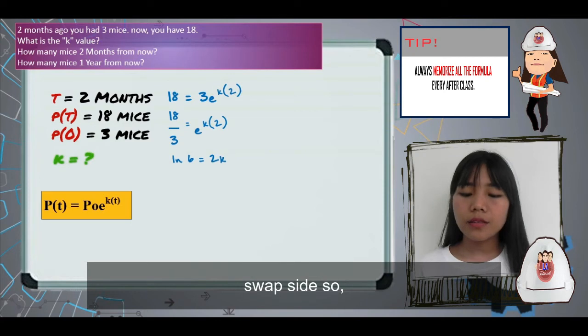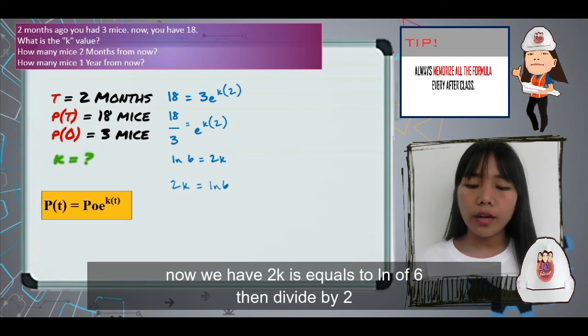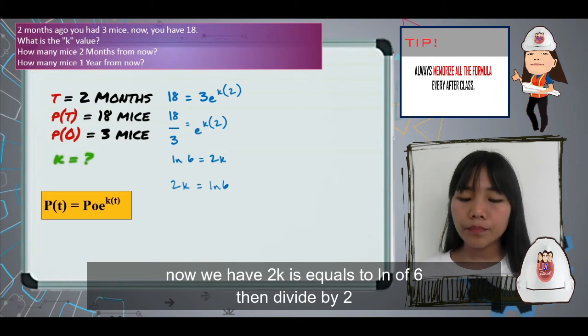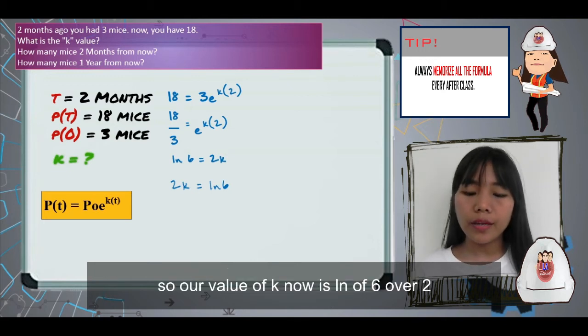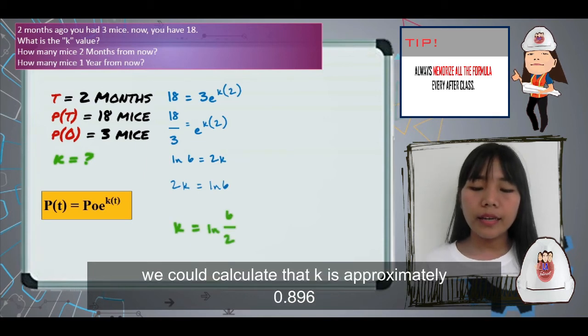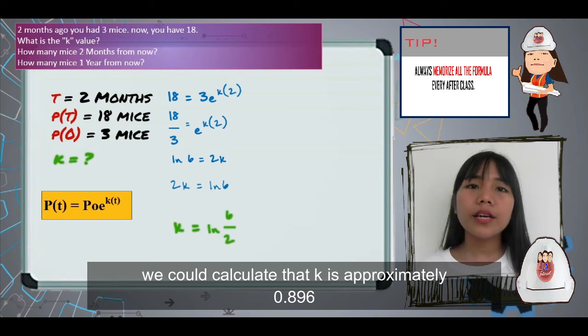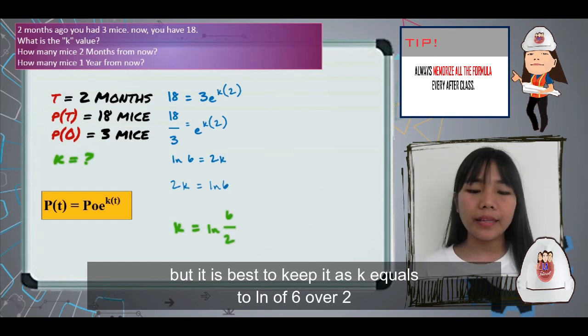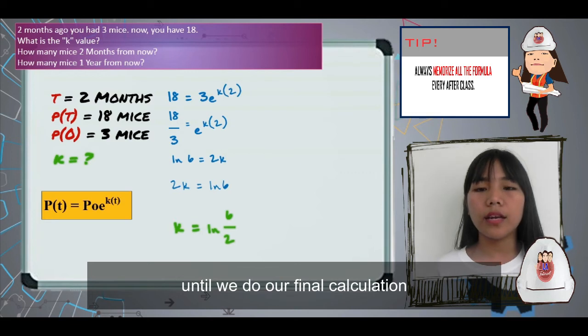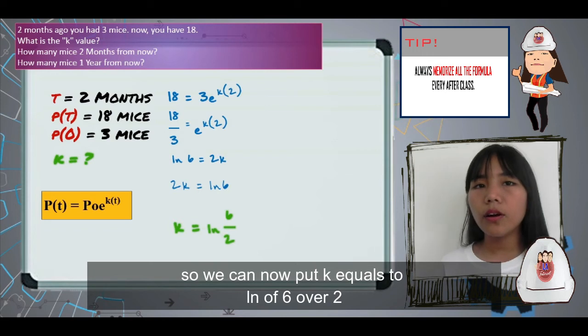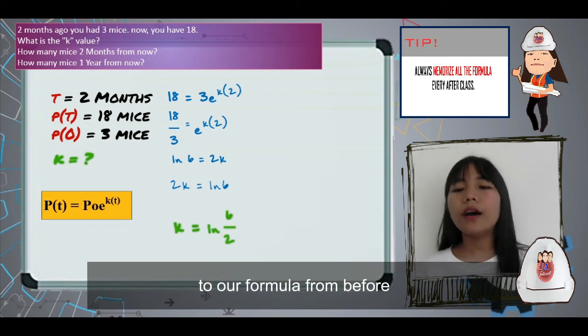Swap sides. Now we have 2k equals ln of 6. Then, divide by 2. Our value of k now is ln of 6 all over 2. We could calculate that k is approximately 0.896. But it is best to keep it as k equals ln of 6 over 2 until we do our final calculations. We can now put k as ln of 6 over 2 into our formula from before.